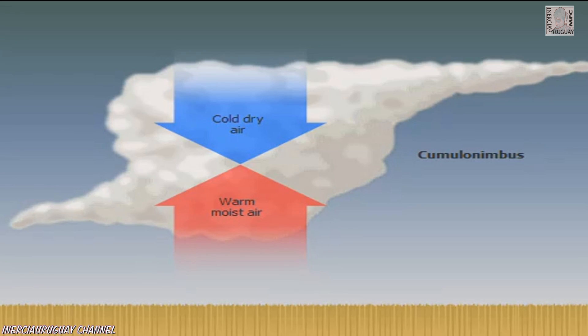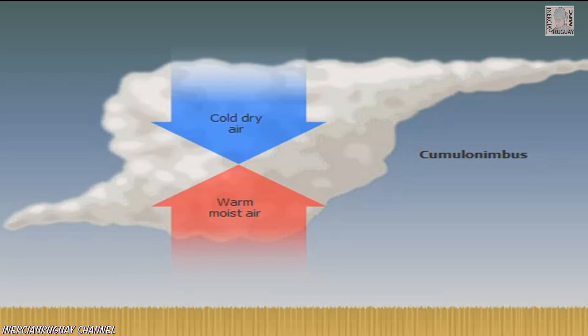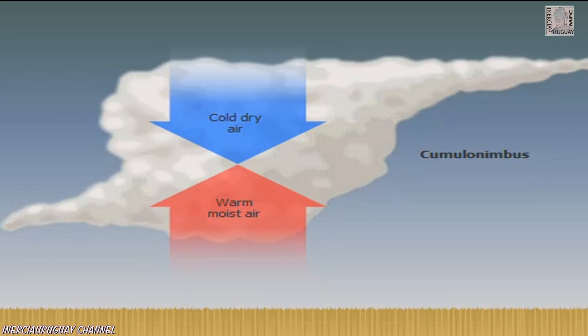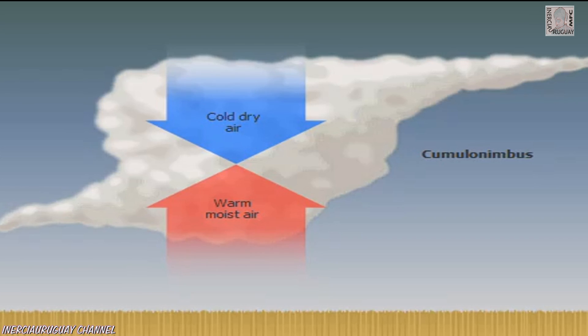Tornadoes form out of the bottom of cumulonimbus clouds, where cold, dry air meets warm, moist air. They are always associated with severe thunderstorms.